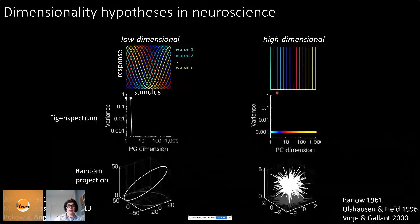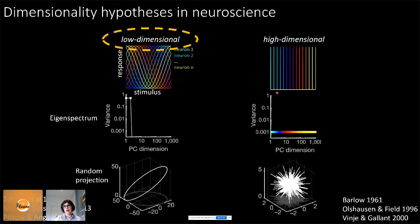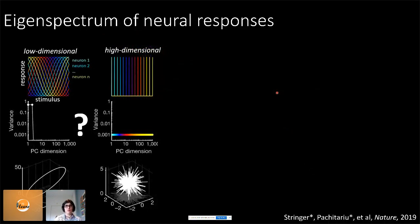Many past studies in neuroscience concluded that neural activity is low-dimensional, but these studies were limited in the number of stimuli shown and the number of neurons recorded. Now we have the ability to record this many neurons and show many stimuli, so we're going to try to answer this question in our large-scale data and see what the eigenspectrum of neural responses looks like.